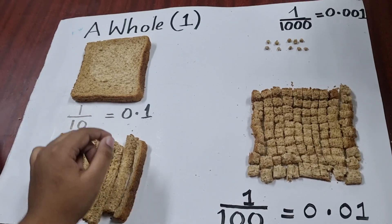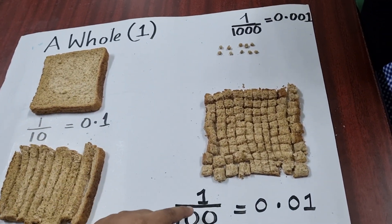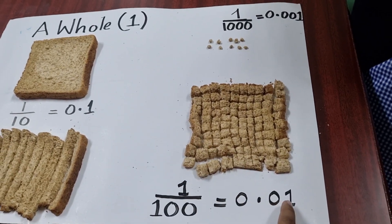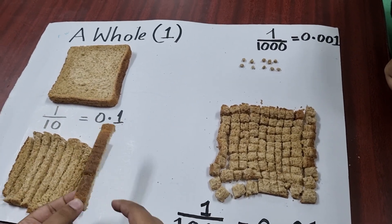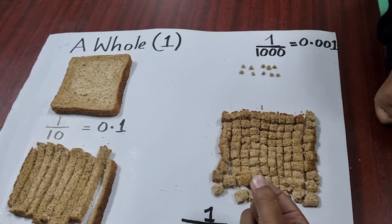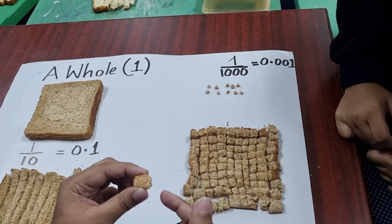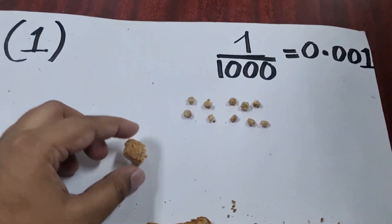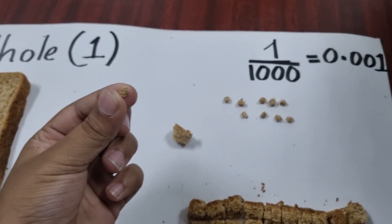Or 0.1. And if this whole is divided into 100 equal parts, we get 1 by 100 or 0.01. One more method: if we divide this into 10 equal parts, we will also get 1 by 100 or 0.01. And if we divide this 1 by 100 into 10 equal parts, we will get 1 by 1000 or 0.001.